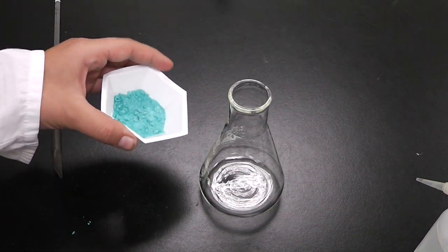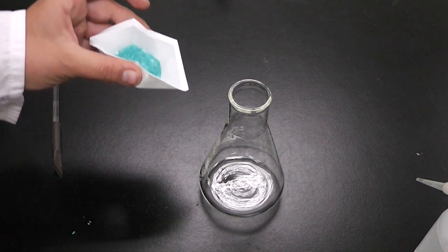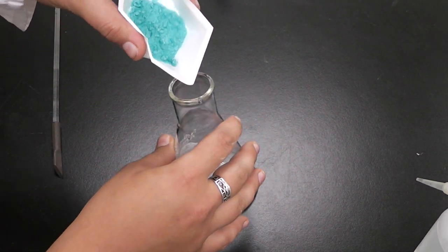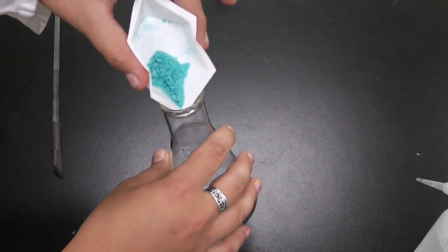To quantitatively transfer your sample, first you must squeeze the edges of the weighing boat and gently tap as much of the sample into the Erlenmeyer flask as you can.